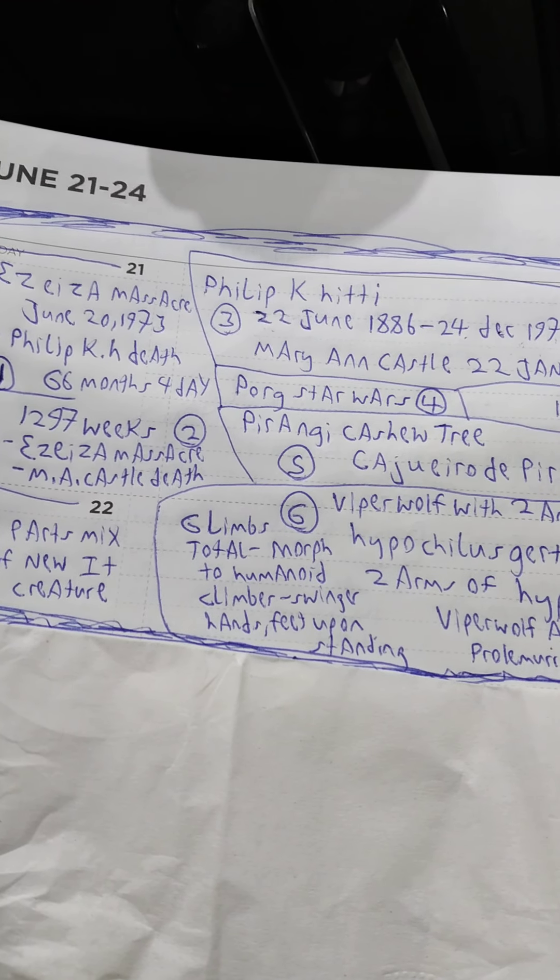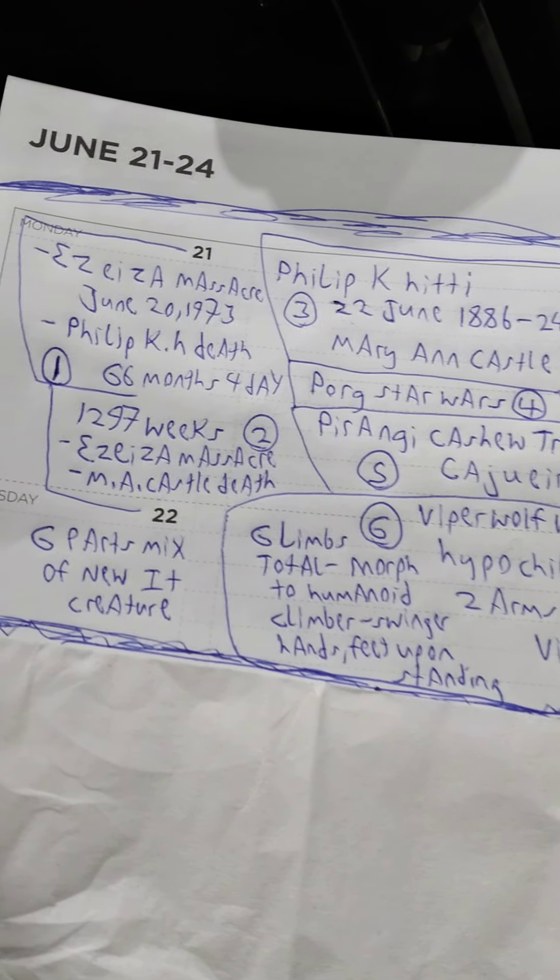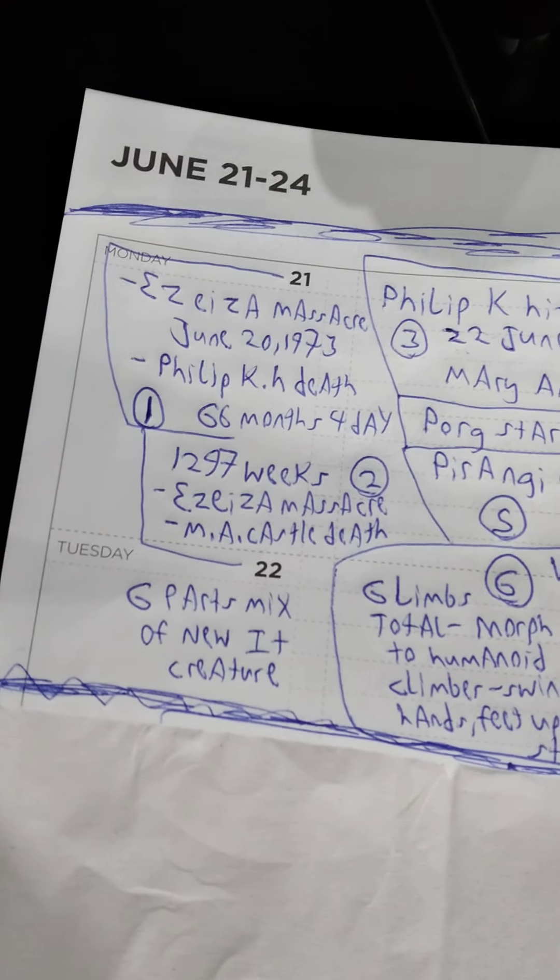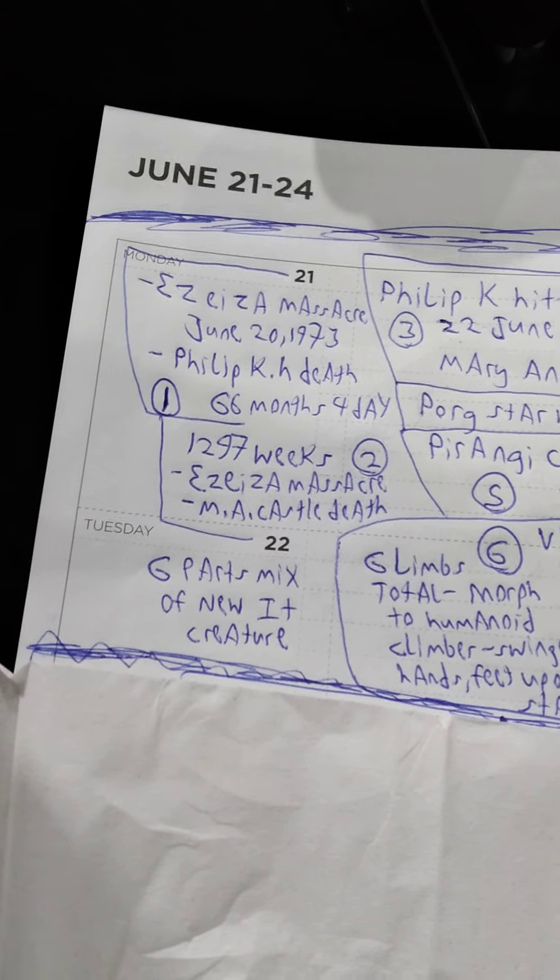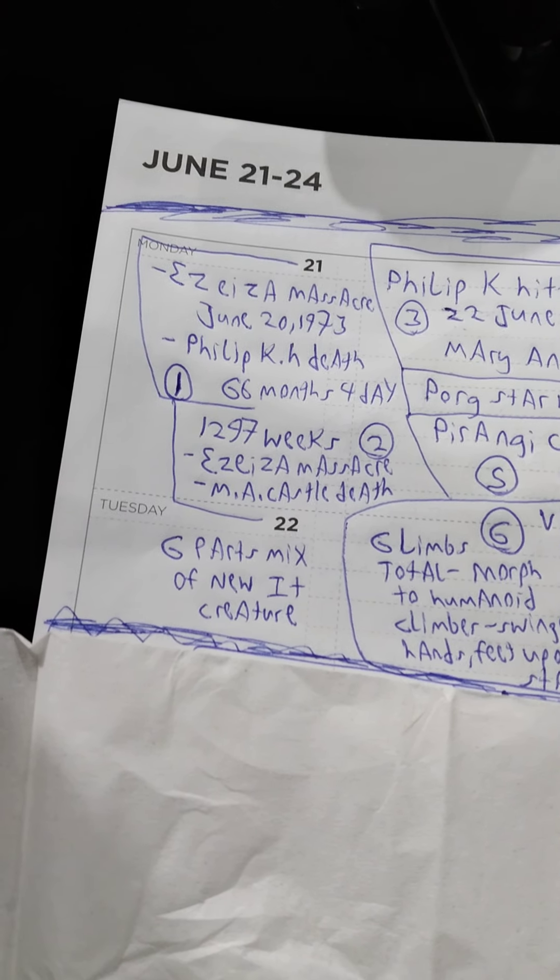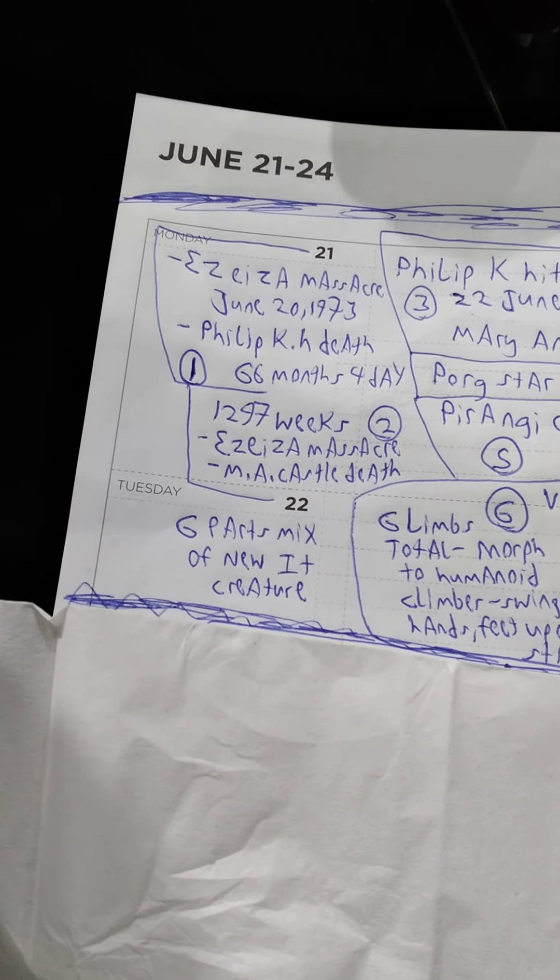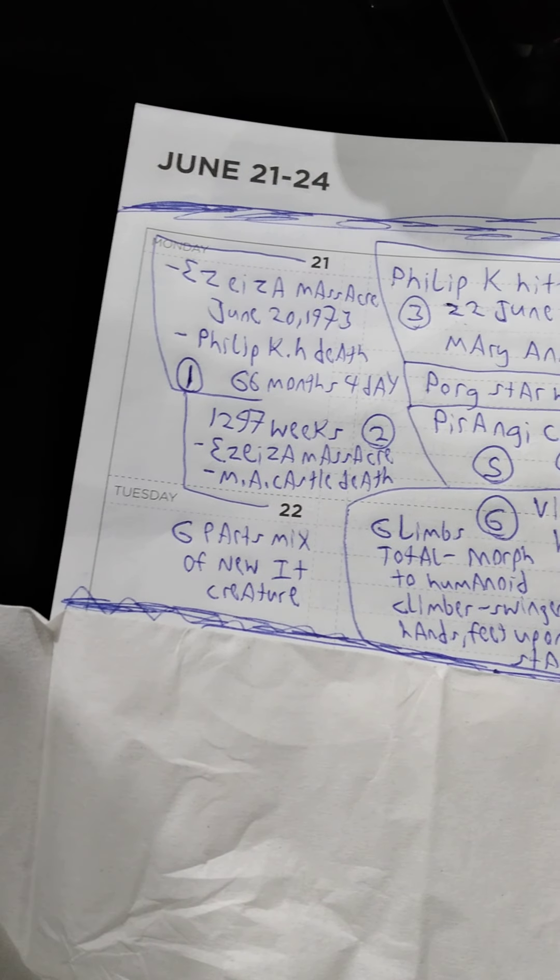Hi, take a look at all this here. This is a new it creature. So from the Aziza Massacre to Philip K. H. death, 66 months, 4 days. Now, 1297 weeks, Aziza Massacre to M. A. Castle death.